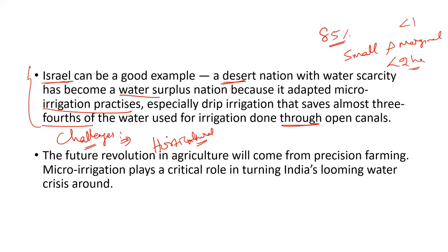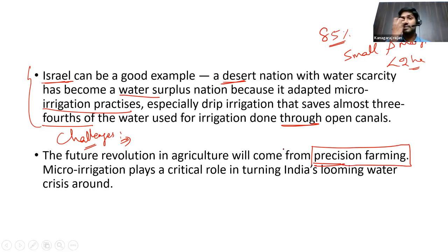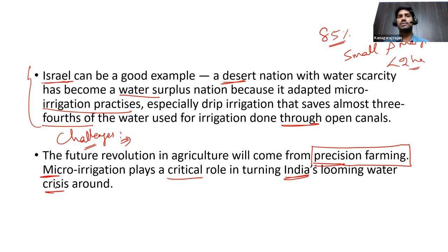In conclusion, the future revolution in agriculture will come from precision farming. Micro irrigation is one of the important techniques under precision farming, playing a critical role in addressing India's looming water crisis. This is the way forward for micro irrigation.